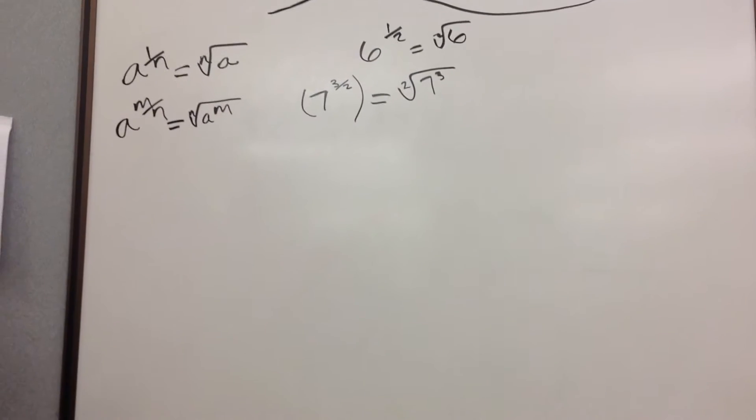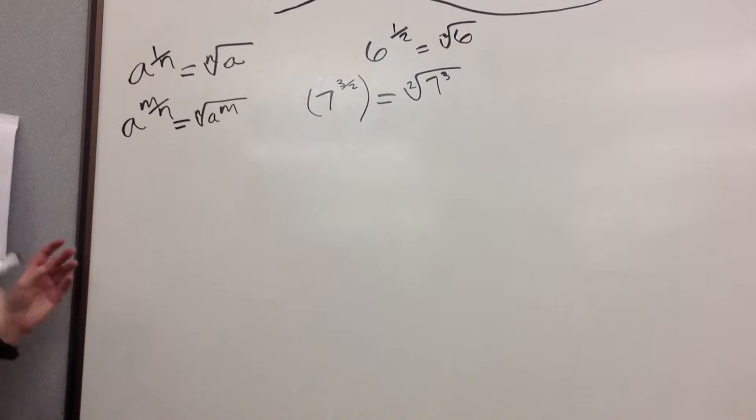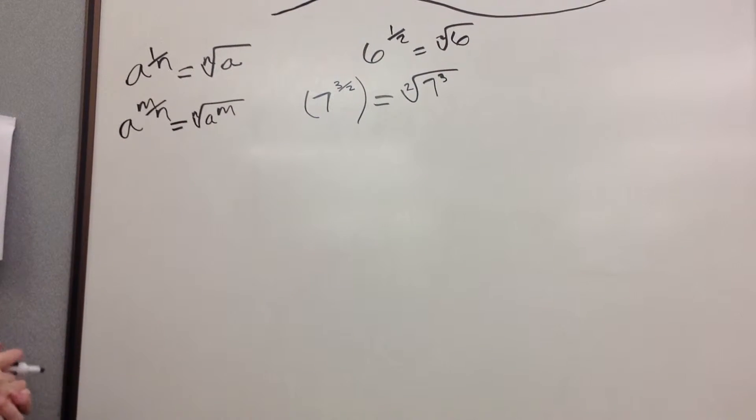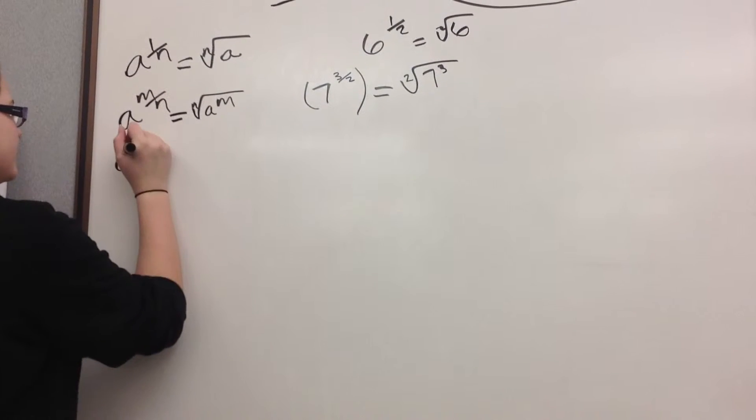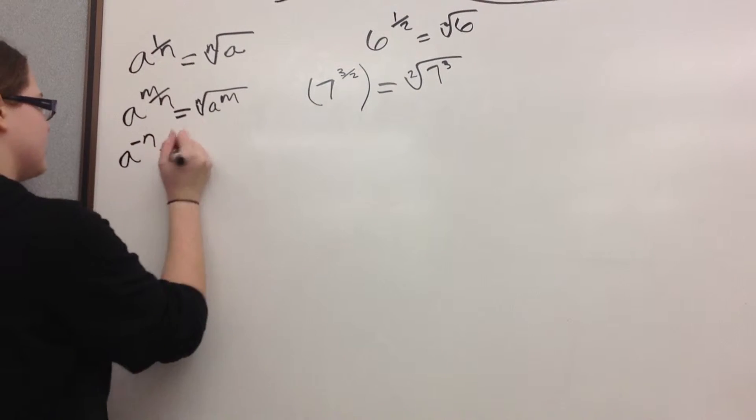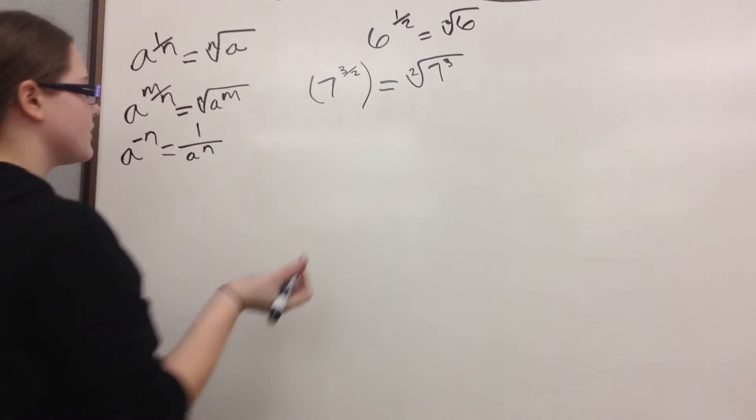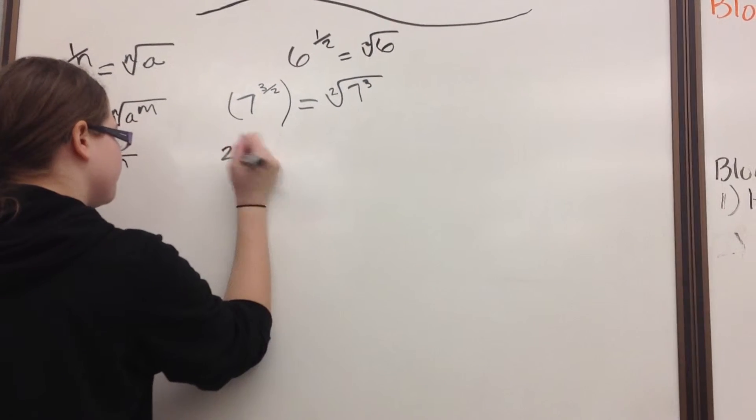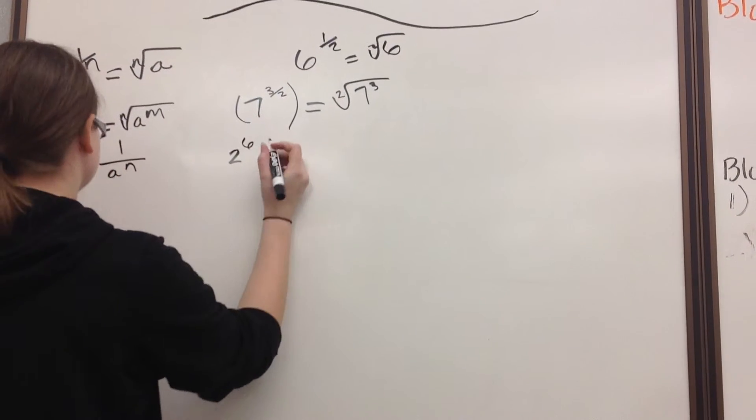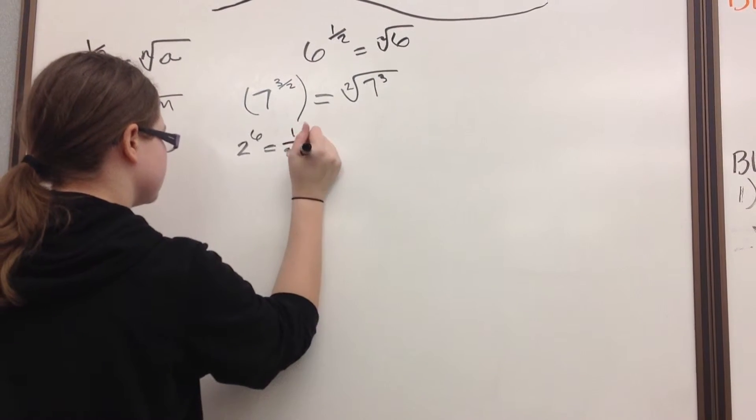So that is exponents and fractions, but there's also exponents and negative numbers. So if you have a to the negative n, it is equal to 1 over a to the n. An example is 2 to the negative 6 is equal to 1 over 2 to the 6th.